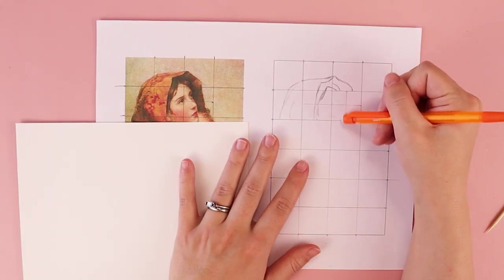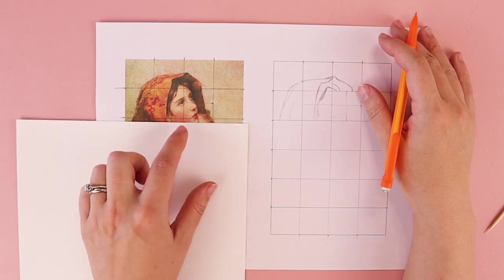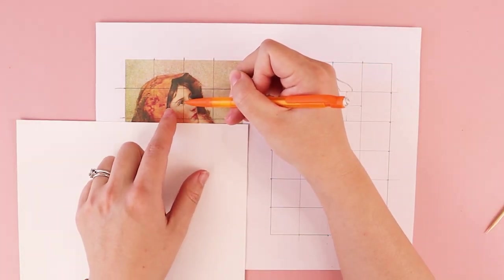So now that I have these extra squares on my grid drawing, I can more easily see where these different features line up.